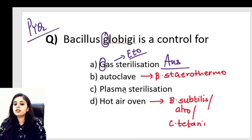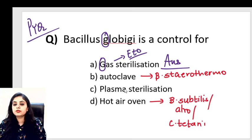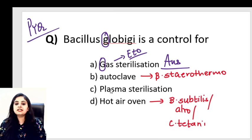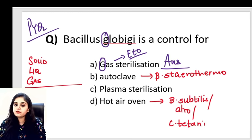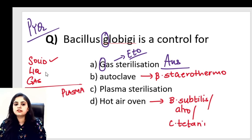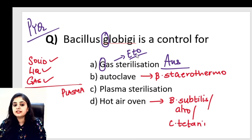There is also something known as plasma sterilization, not very important for the FMG exam but worth an overview. Recall the three states of matter: solid, liquid, gas. The fourth state of matter is plasma. So we've used all states for sterilization: solid filters, liquids like alcohol and glutaraldehyde and betadine, gases like ethylene oxide, and now plasma as well.